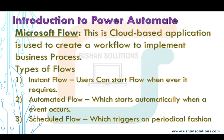In this session we are going to discuss Power Automate. Power Automate is a cloud-based application used to create workflows to implement business processes. We have three different types of flows available. Instant flows can start whenever required. Automated flows start automatically when an event occurs, like when a user creates an item, uploads a document into a document library, checks out or checks in a document, or an email arrives in a mailbox.